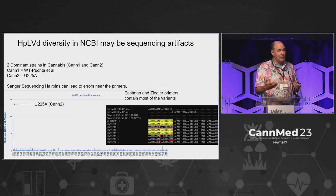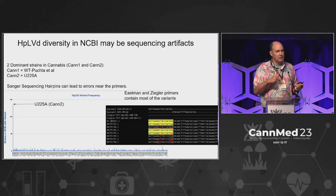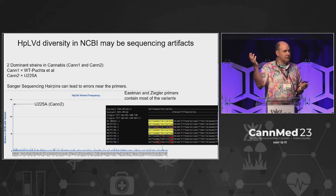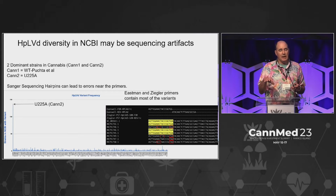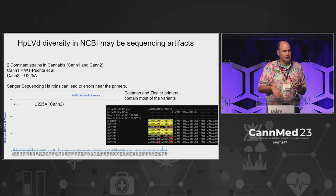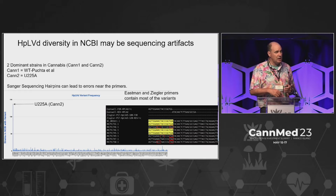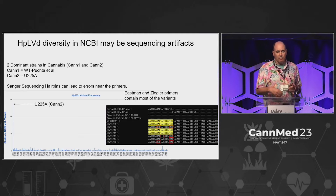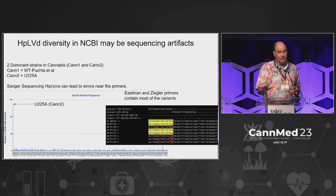What we're seeing as we categorize all these variants is the vast majority are what is known as CAN2. Dark Heart Nursery, when they first came out with this, said they were seeing predominantly two variants: CAN1 and CAN2. CAN1 is the PUCTA reference that was discovered in hops in the late 80s, and CAN2 is what they're finding in the United States. Over 130 of these strains all have the U225A change known as CAN2. The rest appear to be sequencing artifacts or very rare variants.